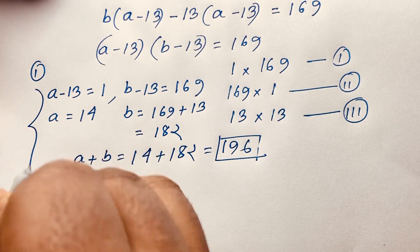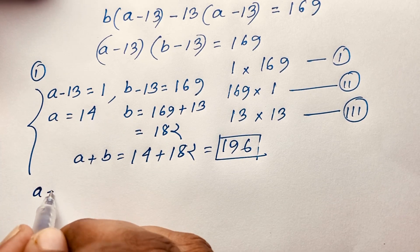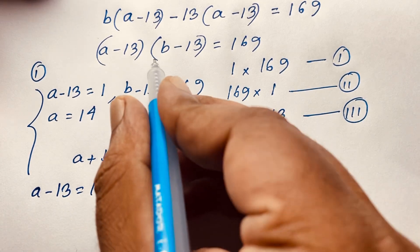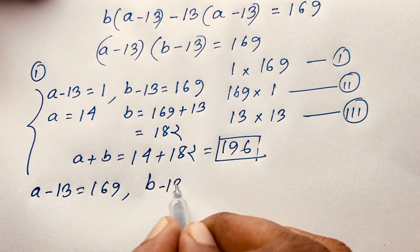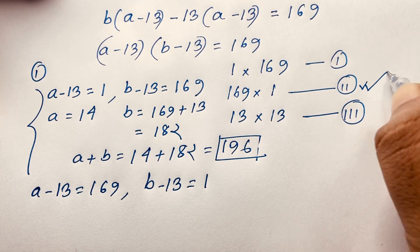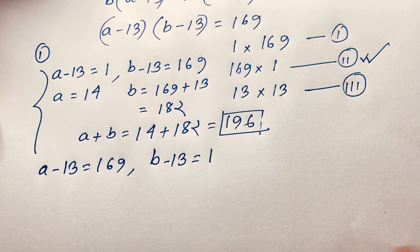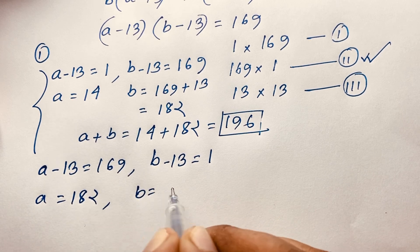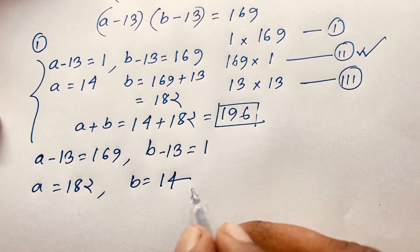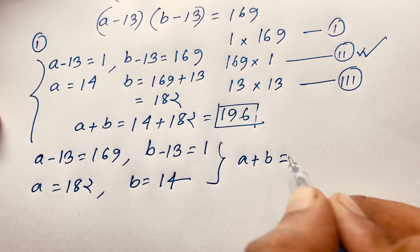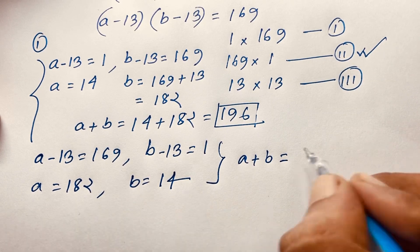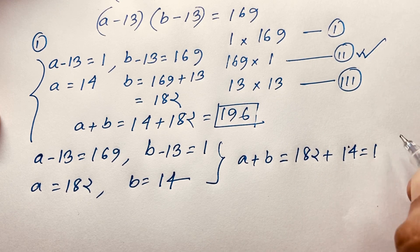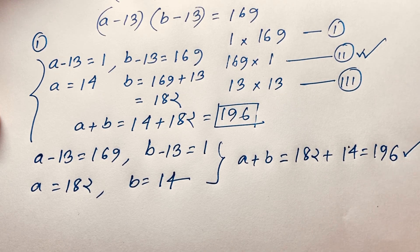Case 2: a minus 13 equals 169 and v minus 13 equals 1. So a equals 182 and v equals 14. Adding both: a plus v equals 182 plus 14, which equals 196. This is our final answer for case 2.